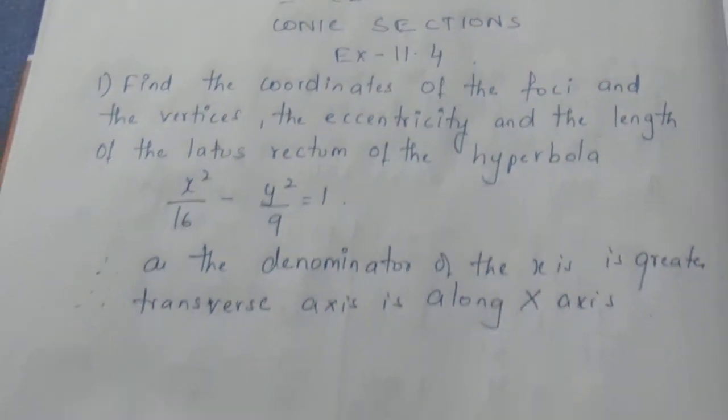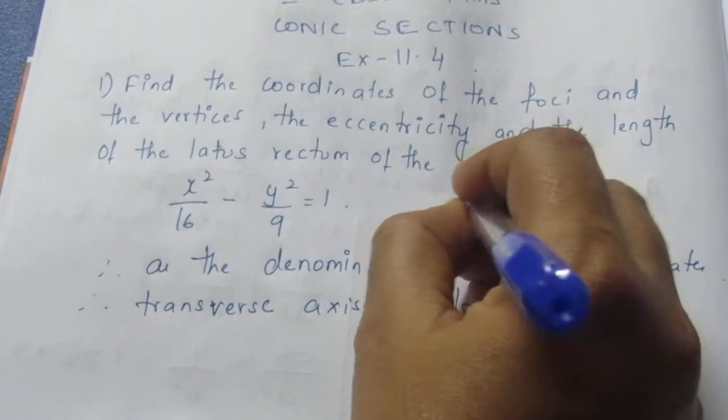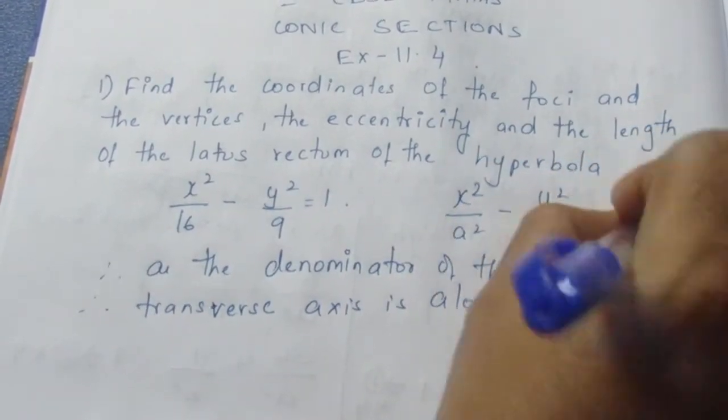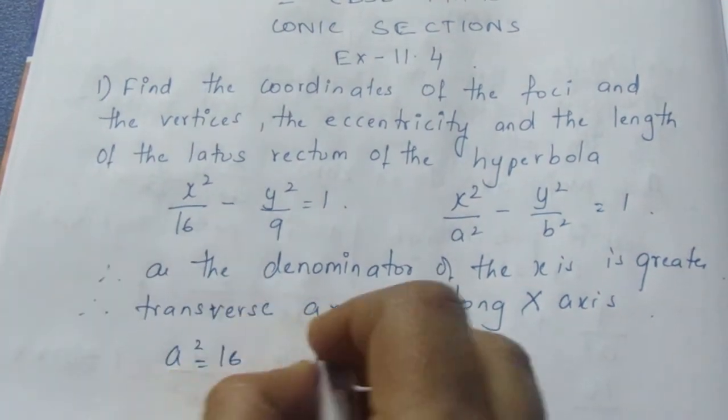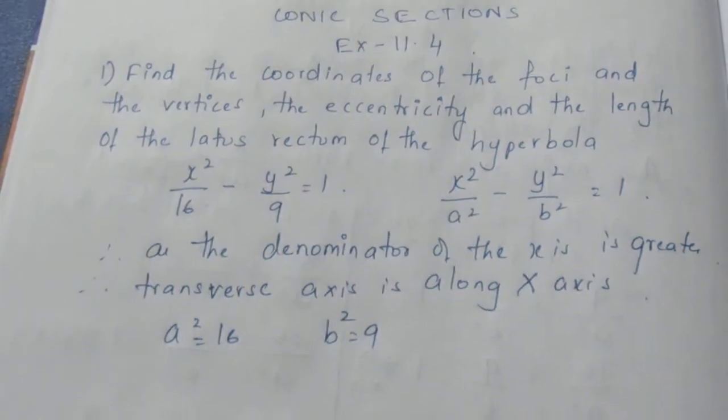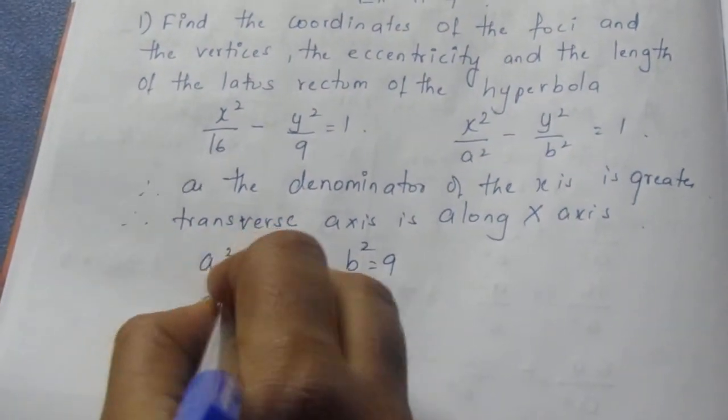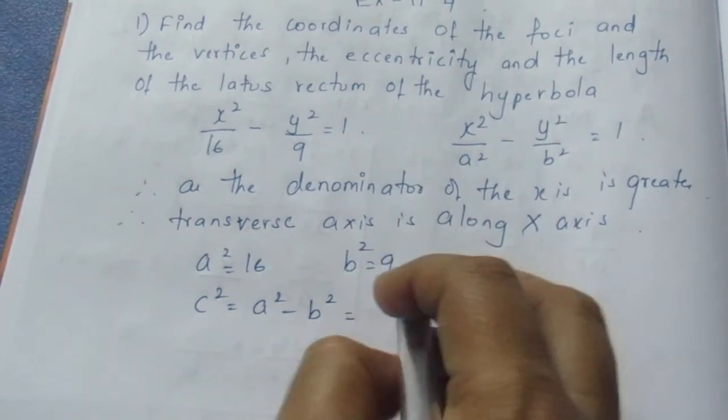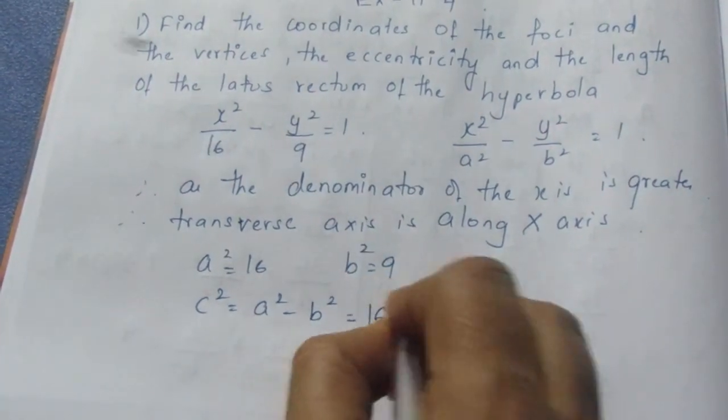The general equation is x²/a² - y²/b² = 1. We know that a² = 16 and b² = 9. We need to find c².